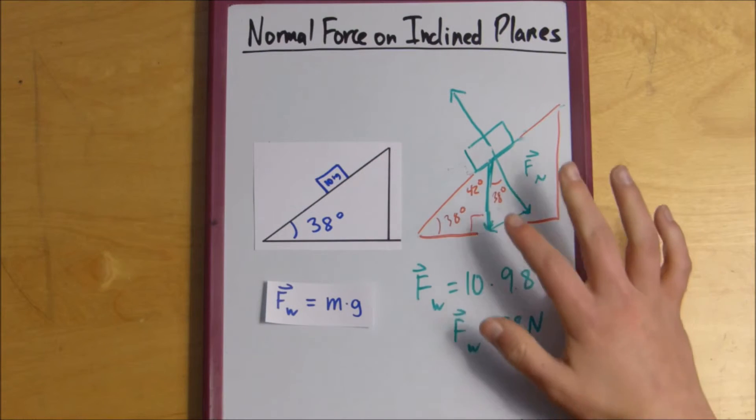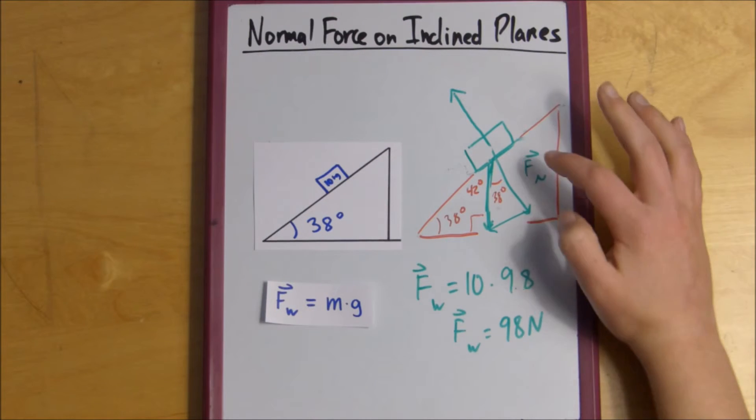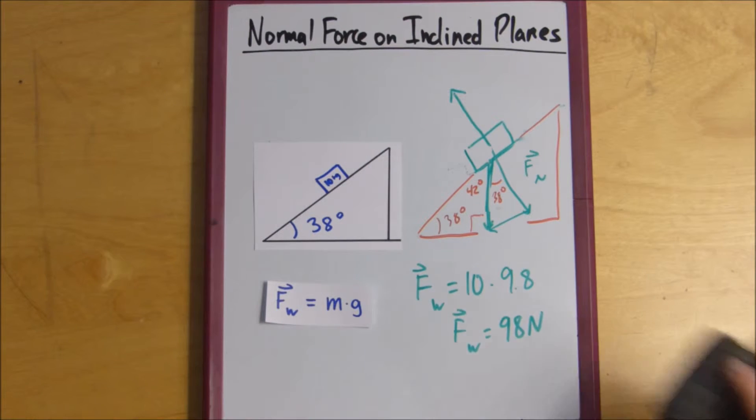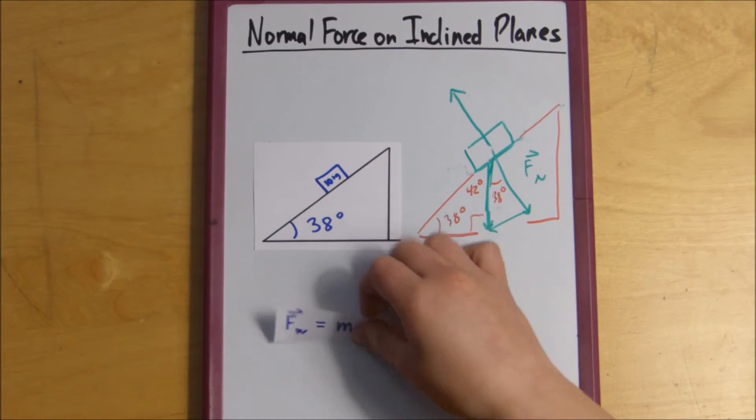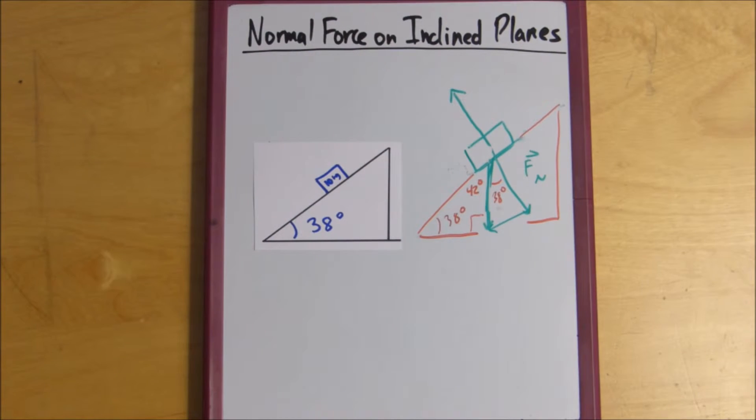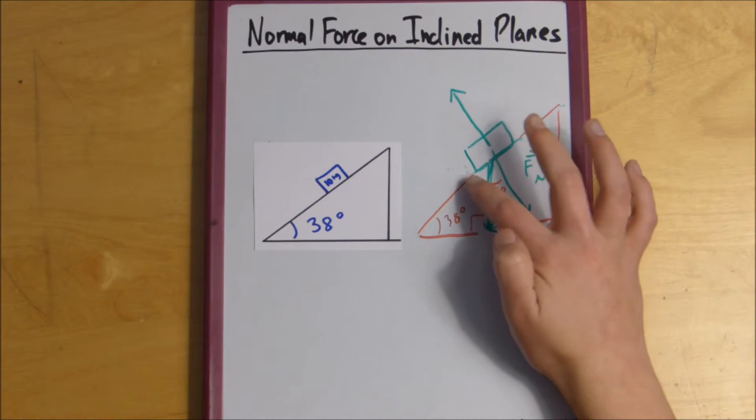So now that we have that, we need to figure out if we need to use cosine or sine to figure out our normal force. So we know that we're trying to find the adjacent. And we have the hypotenuse.